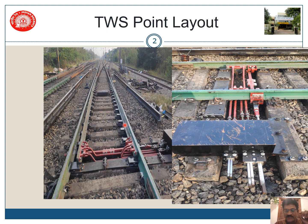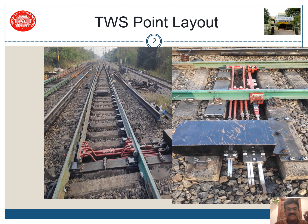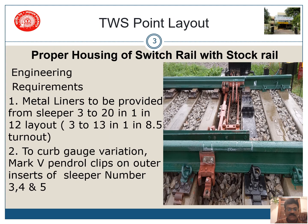Generally, in TWS, the switch rail and tongue rail will be housing up to 10 sleepers very easily and with proper adjustment, it will be available up to the 13th sleeper. What are the important points here? Let us start with metal liners and engineering requirements.